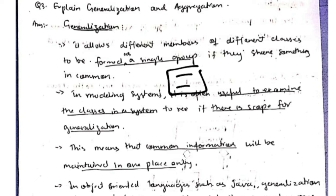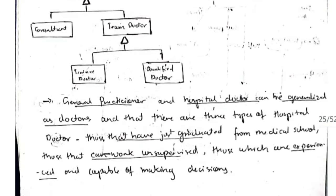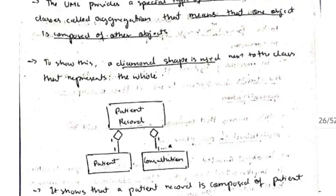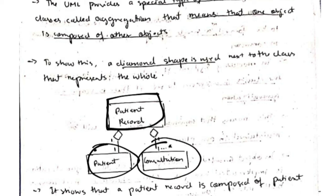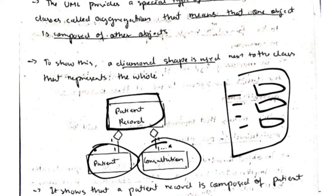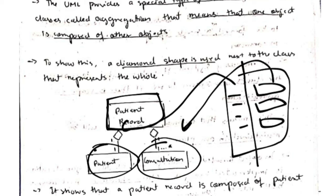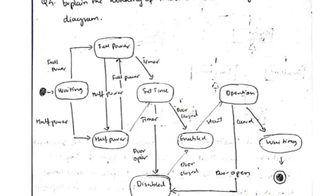Generalization means grouping similar things together in a single group. Aggregation: a patient record is composed of two objects — patient and consultation. A patient record contains all patient names and their consultation information, so these two parts are mentioned as separate entities. That is aggregation.